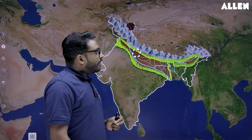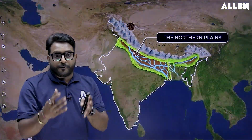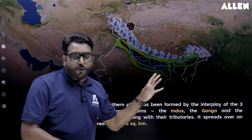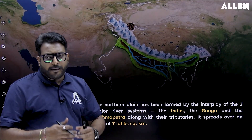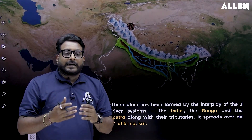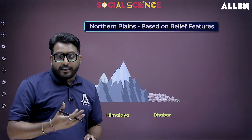The next physical feature is the Northern Plains, also known as the granaries of India. They are formed due to the interplay of three major Himalayan rivers and their tributaries — the Indus, the Ganga, and the Brahmaputra — and spread over an area of seven lakh square kilometers. Though the term 'plains' suggests flatness, there are variations based on certain relief features.